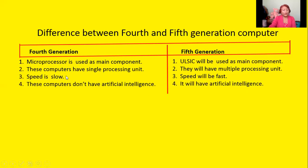The speed is slow in fourth generation computers. Comparatively, the speed of fifth generation computers will be faster — faster than first, second, third, and fourth generation computers.